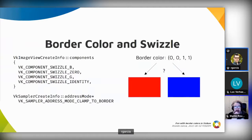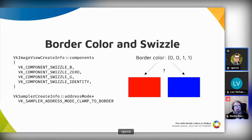For example, you specify a custom border color of (0, 0, 1, 1), which is opaque blue, and an addressing mode of clamping to border in the sampler. The image view has a swizzle where the red component comes from the original blue, the green component is zero, the blue component comes from the original green, and the alpha component is not modified. So if the swizzle applies to the border color, you get red. And if it does not, you get blue.